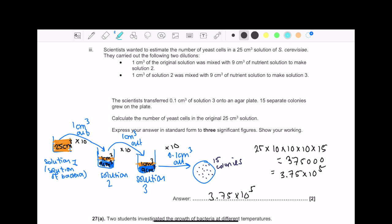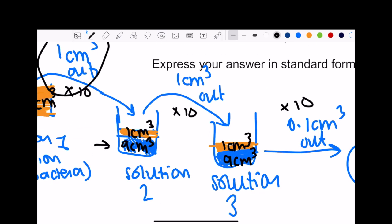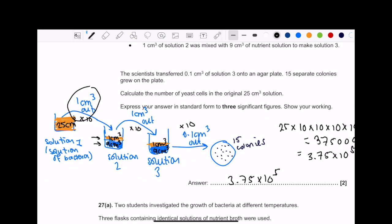Then it says 1 cm³ of the original solution was mixed with 9 cm³ of nutrient solution to make solution 2. So this is solution 1, that's solution 2. We've taken 1 cm³ from solution 1 and put it into solution 2. That 1 cm³ mixed in means we now have 10 cm³.